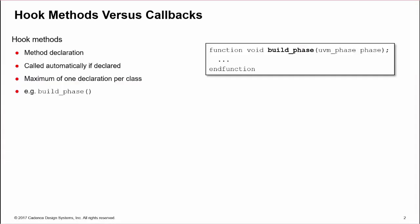First, let's define the difference between hook methods and UVM callbacks. Both automatically execute a method at a certain point in simulation, but they are declared very differently. Hook methods are a method declaration. Simply declaring the method means it will be executed. There can only be one declaration per class.